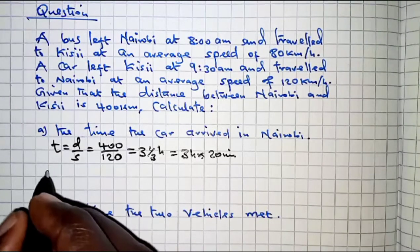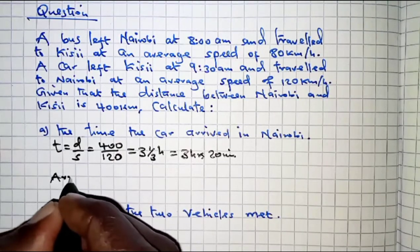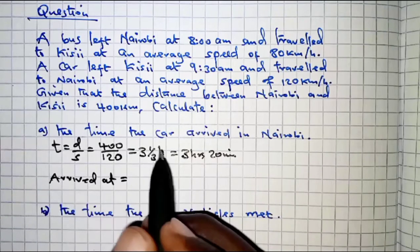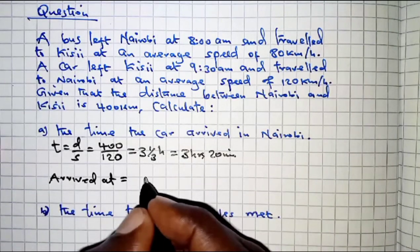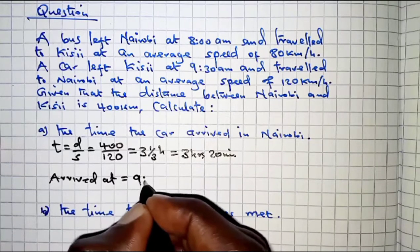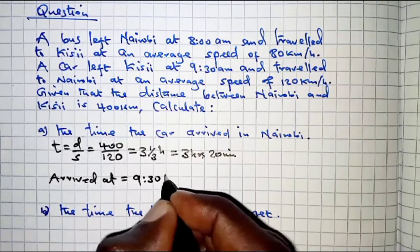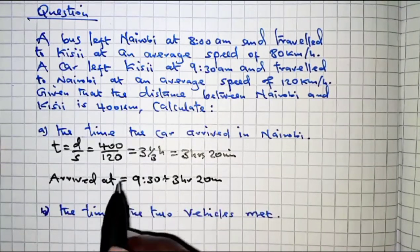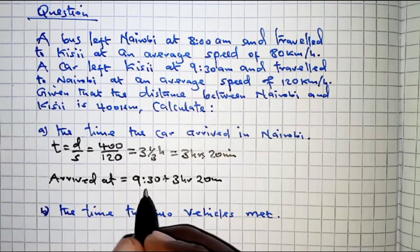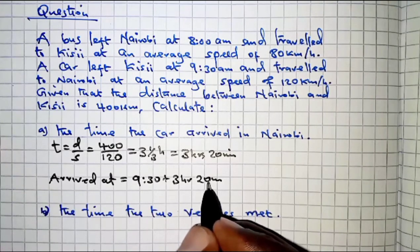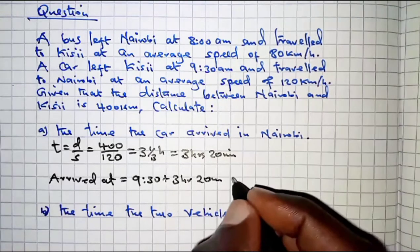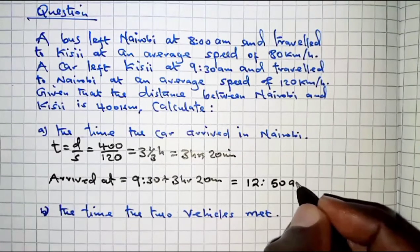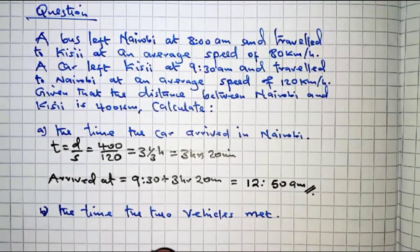Once we are done with that, we can now get the arrival time. The car arrived in Nairobi at — we take 9:30 a.m. and then add 3 hours 20 minutes. Remember the car left Kisii at 9:30 a.m. and took 3 hours 20 minutes to travel to Nairobi. So the car arrived in Nairobi at 12:50 p.m. That is for part A.